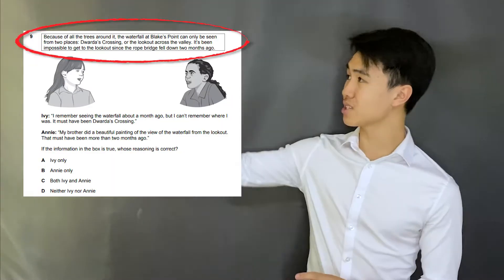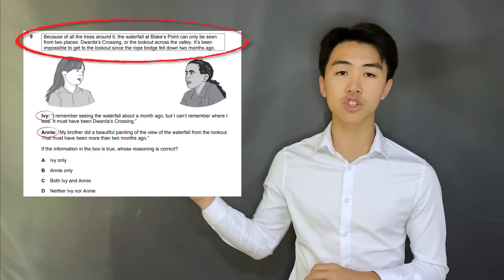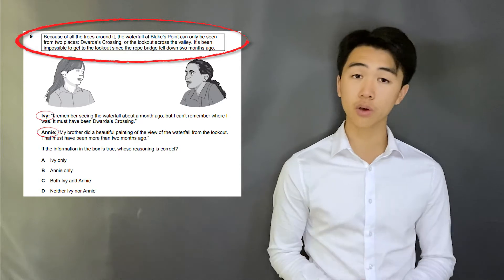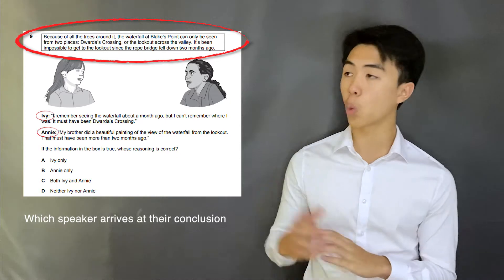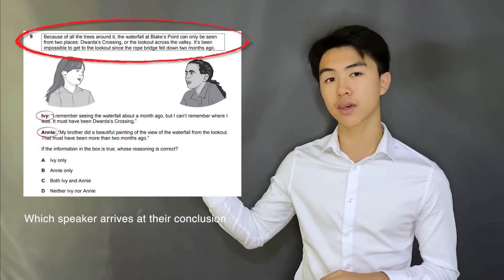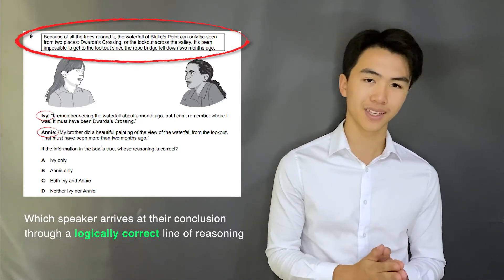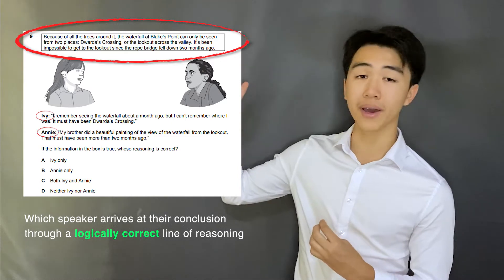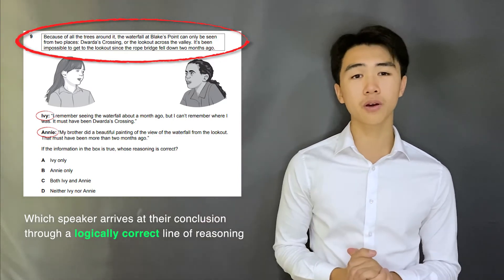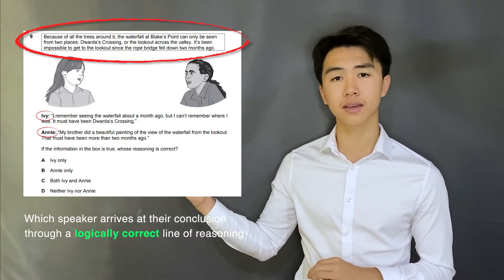Whose reasoning is correct is a question type that involves a passage of information inside a box, two speakers each drawing a conclusion based off the information in the box, and in this question it's your job to figure out which speaker has arrived at the conclusion through a logically correct line of reasoning. I love this question, not only because the formatting looks the same every single time, but also because when you break it down, it's actually much more basic than it seems.